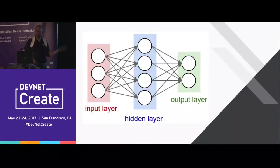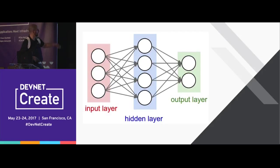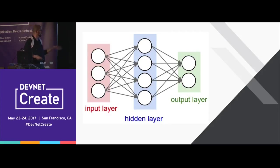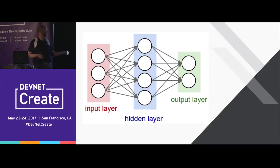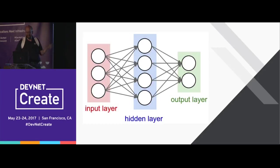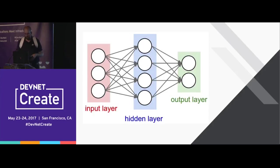It doesn't take a lot of code to get started — all of that code is available on TensorFlow.org. But let's talk about what it's actually doing. This is a neural network: we take in some inputs, we have weights associated with those inputs, and that gives us another set of inputs — the hidden layer. Then we have weights associated with that, and then we have our outputted prediction. That is all a neural network is.